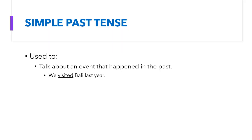Simple past tense is used to talk about an event that happened in the past. For example, 'we visited Bali last year.' I'm just telling about an activity I did last year. Simple past tense is used with time markers like: yesterday, last year, last week, two minutes ago, just now, etc.